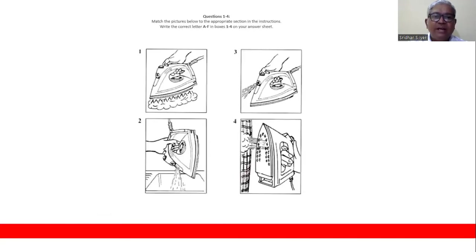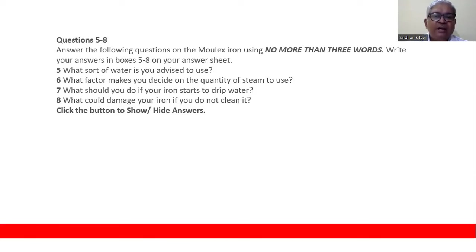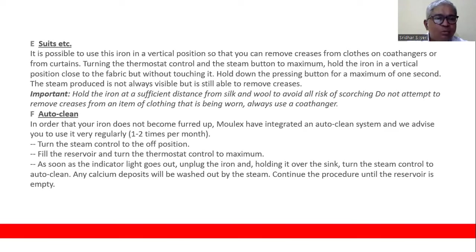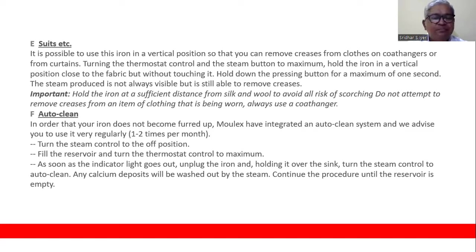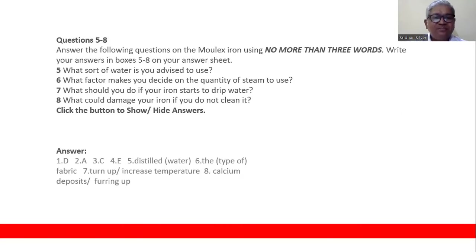'What could damage your iron if you do not clean it?' Go to Auto Clean. In order that your iron does not become furred up, turn the steam control to auto clean and any calcium deposits will be washed off. So 'calcium deposits' is the right answer. You could also write 'furred up' from the text — they will not penalize it and will give you the score.